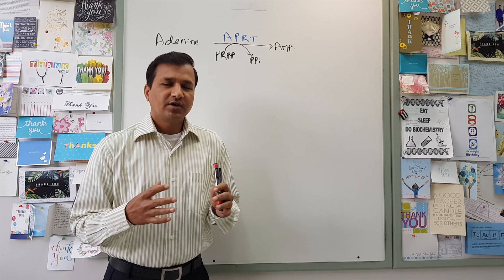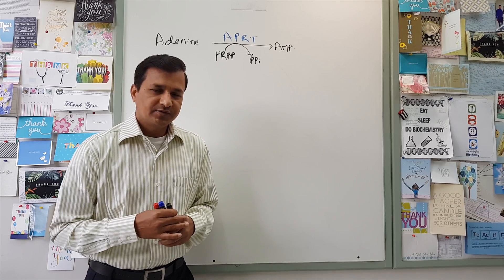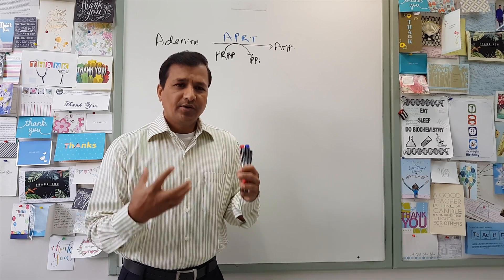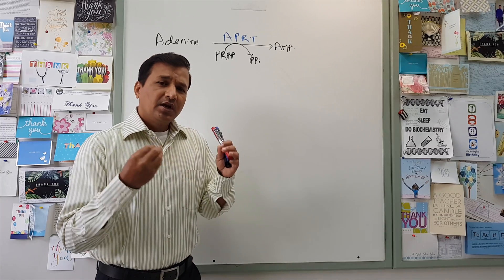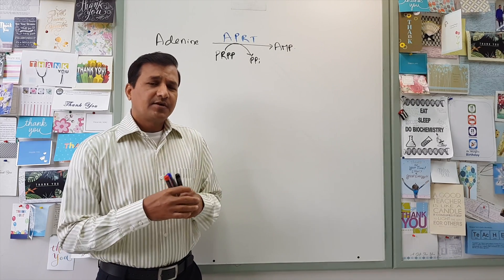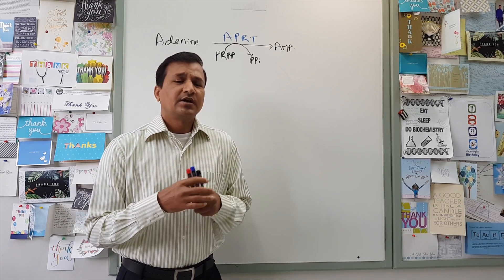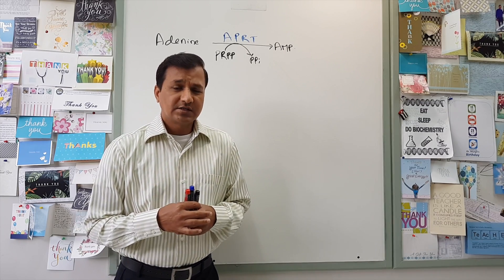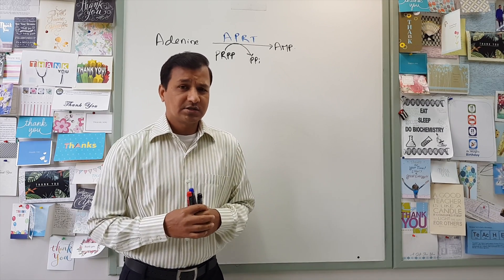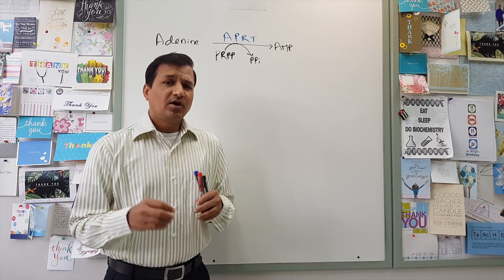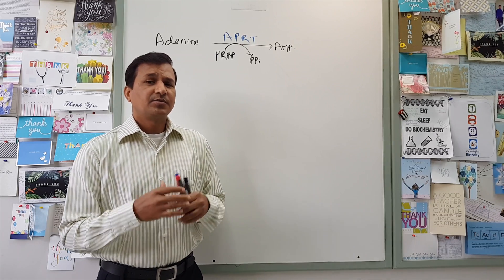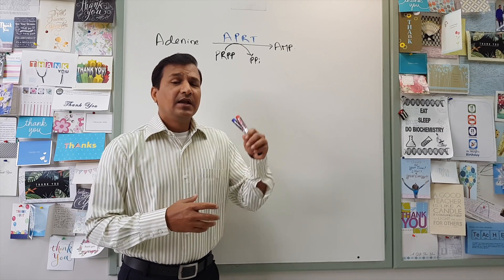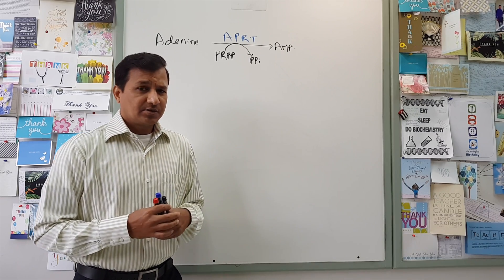In order to understand severe combined immunodeficiency disorder, we need to have a little background about purine salvage enzymes — what they are, how purines are salvaged, and what happens if there is a deficiency of any of the enzymes involved. I have a detailed video on the purine salvage pathway and pyrimidine salvage pathway; the link is in the description below.